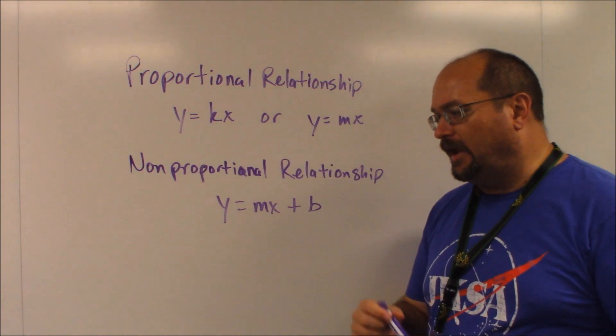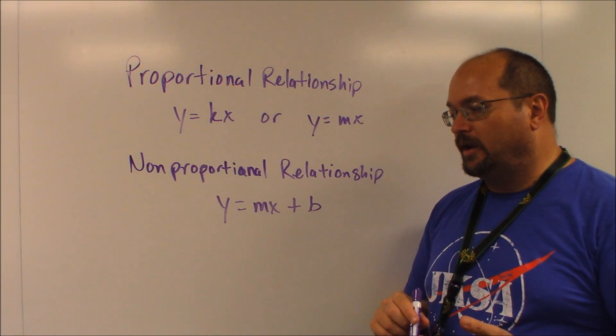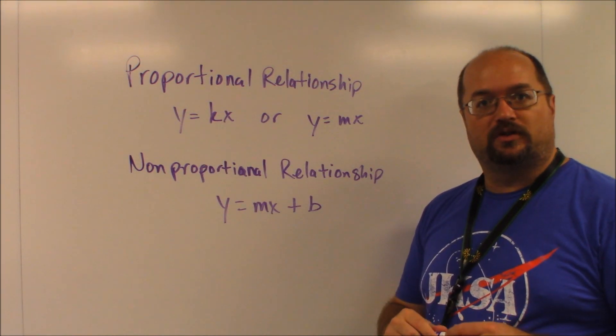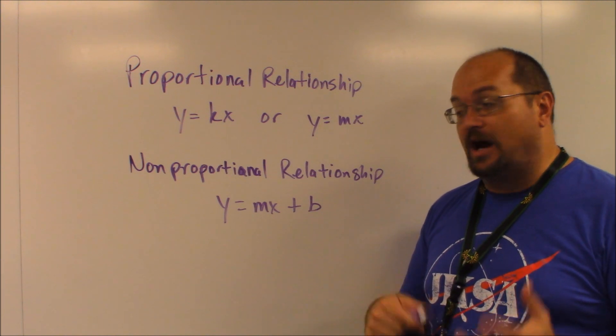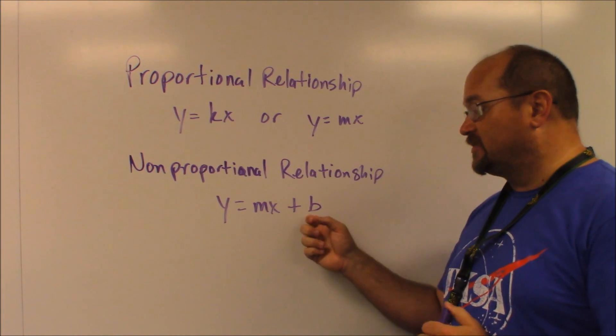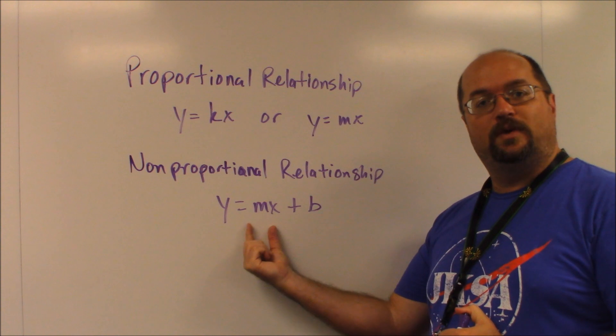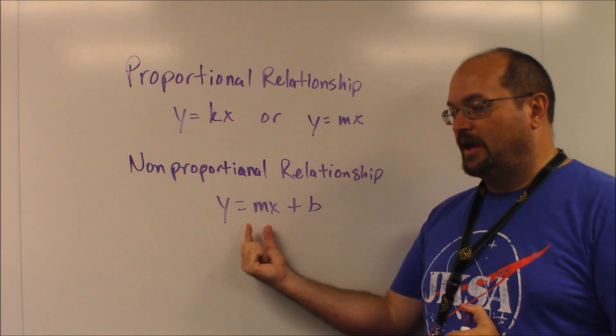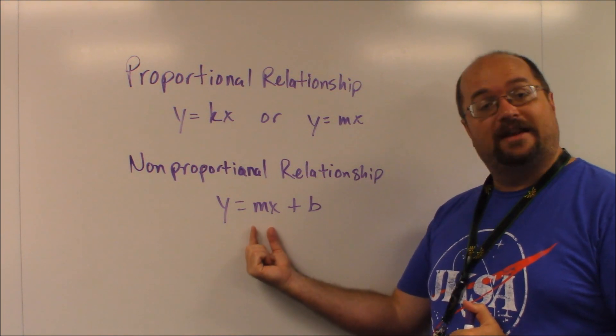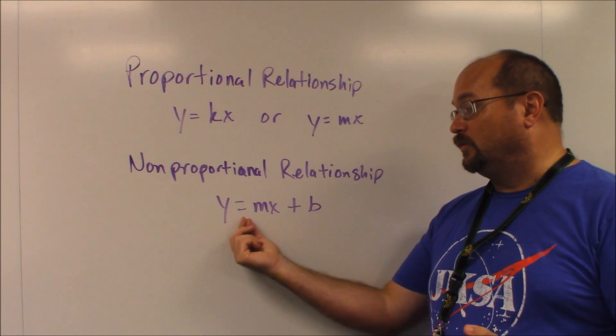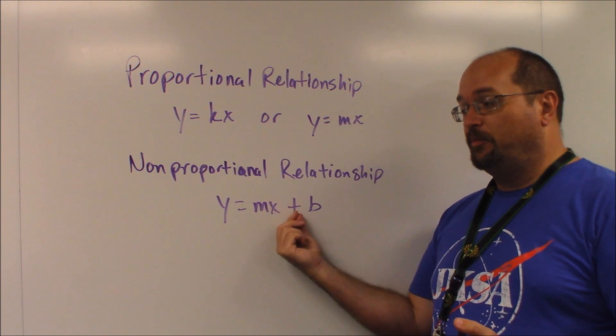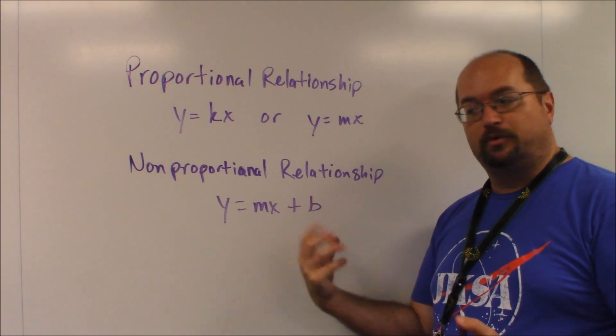So for example, on question number one, a plumber charges a $75 service fee on answer choice A. Well, that's a non-proportional relationship because that service fee doesn't have anything to do with his per hour rate of $30. So that equation would look like y equals 30x plus 75, non-proportional relationship.